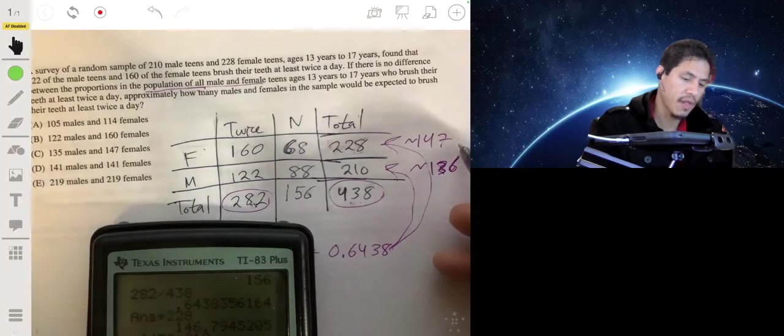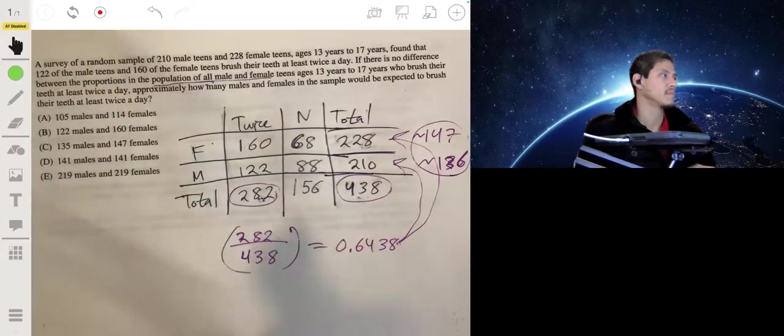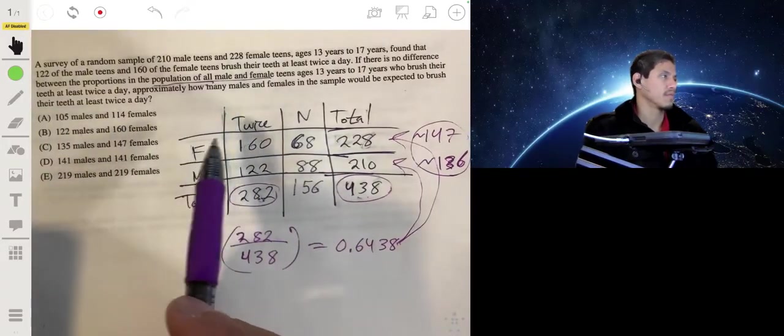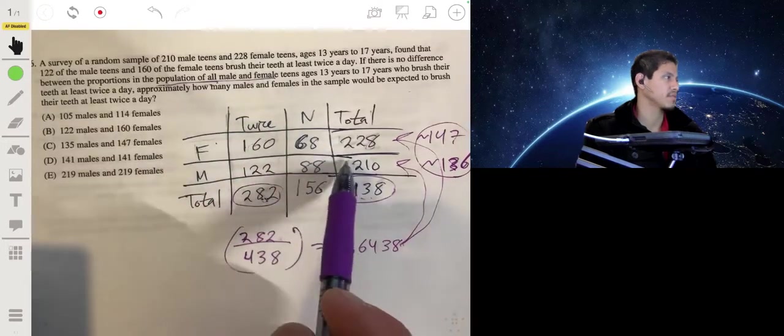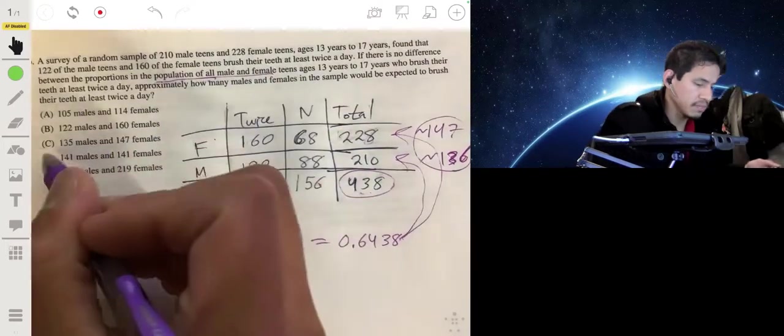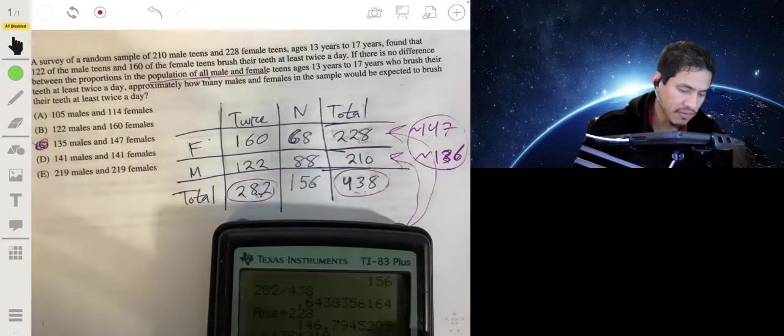We'll do 0.6438 times 210, and we'll get about 136. We would expect this many of each group if there was no difference in proportion of groups that brushed their teeth twice a day. That would be the closest, about B or C. Remember, these are approximations. I should actually round out to 135.